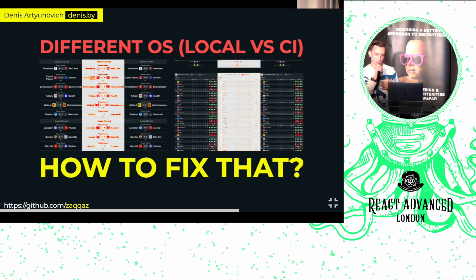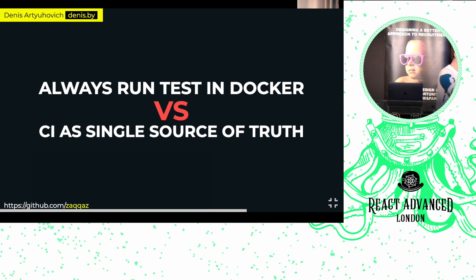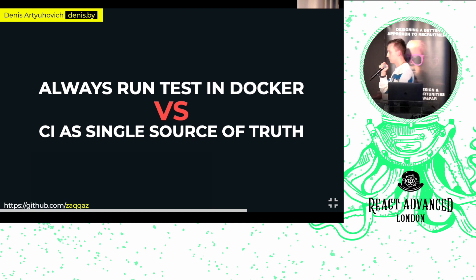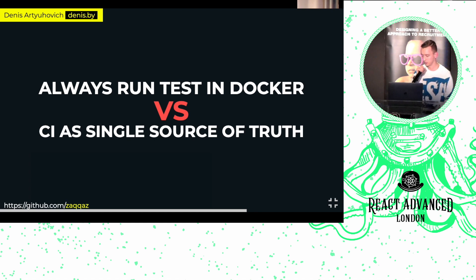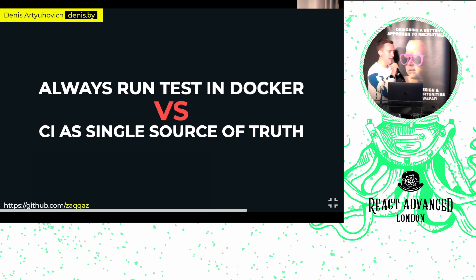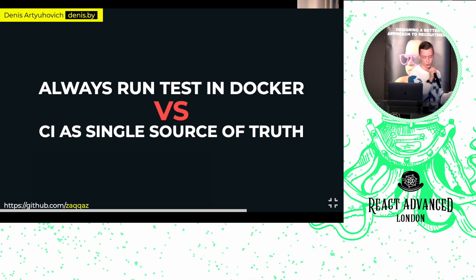There are a few ways to fix this. One option: always run tests in a Docker container — great if your architecture allows it. With CircleCI you can use their local execution command: `circleci local execute` with the name of your job, and it picks up your config.yaml and runs everything. If that's not possible, you can use CI as a single source of truth. We have two folders — local and CI. Running tests locally compares against local baseline images; only on CI can you update those images.